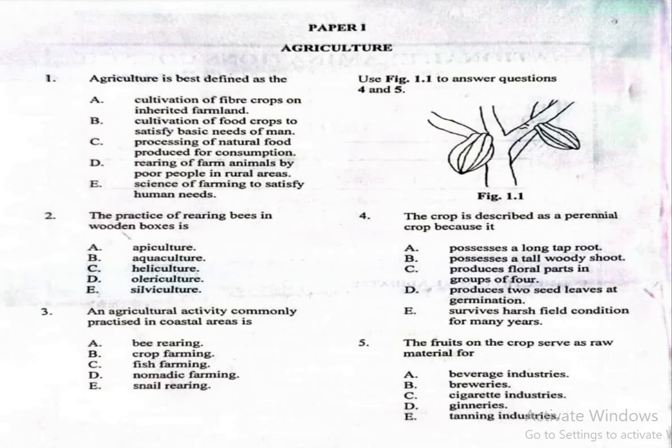The very first question here says, Agriculture is best defined as the: A. Cultivation of fiber crops on inherited farmland, B. Cultivation of food crops to satisfy basic needs of man, C. Processing of natural food produced for consumption, D. Rearing of farm animals by poor people in rural areas, E. Science of farming to satisfy human needs. The correct answer is option E.